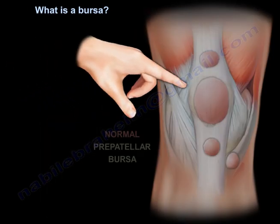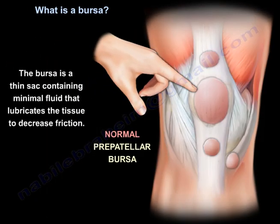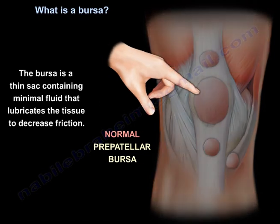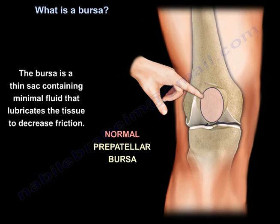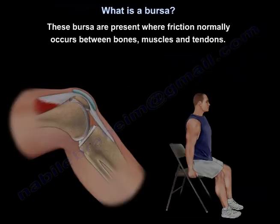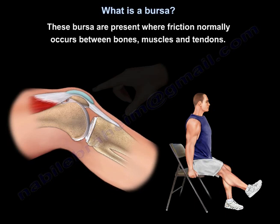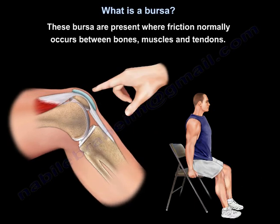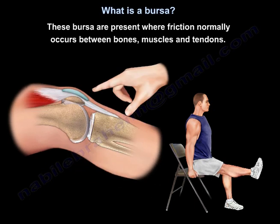A bursa is a thin sac containing minimal fluid that lubricates the tissue to decrease friction. These bursa are present where friction normally occurs between bones, muscles, and tendons.